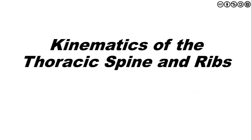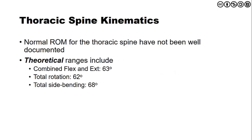Now we're going to transition to look at the proposed kinematics of the thoracic spine and ribs. The normal range of motion in the thoracic spine is not a lot. The theoretical ranges include a combined flexion and extension of 63 degrees, with flexion being more than extension — probably around a two-thirds to one-third ratio, so approximately 40 degrees of flexion and 20 to 23 degrees of extension. The total amount of rotation is 62 degrees. If we think about that, 62 degrees bilaterally is really only 31 degrees divided by 12 segments — that's less than 3 degrees per segment, somewhere around 2.3 to 2.4 degrees of rotation per segment. At that level, we're talking about joint play and translational movements.